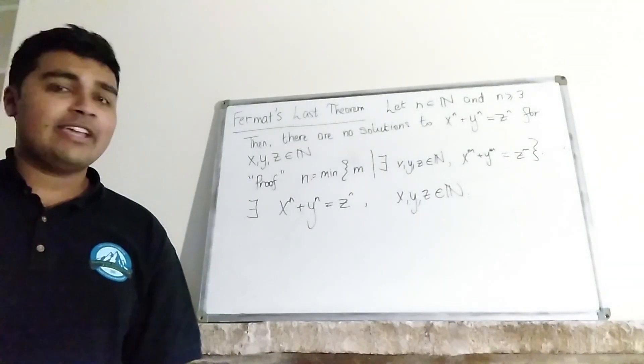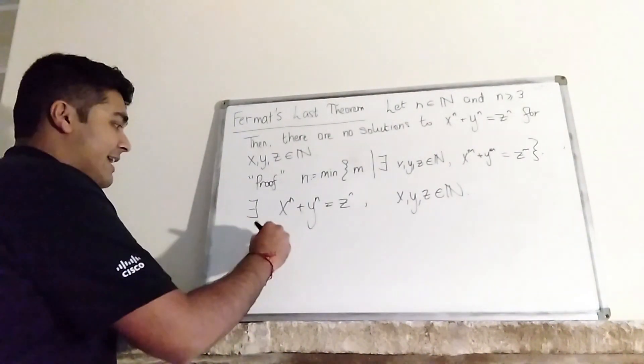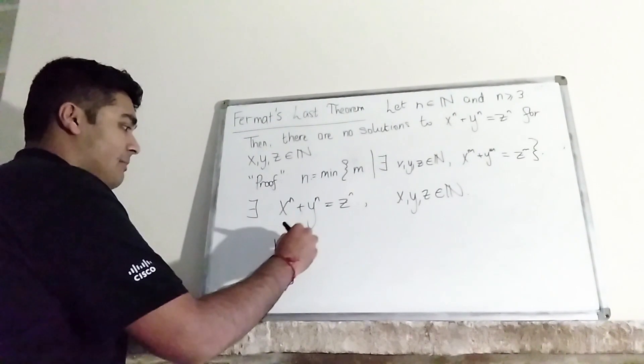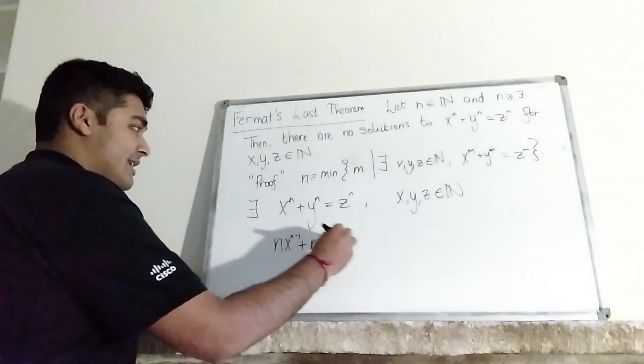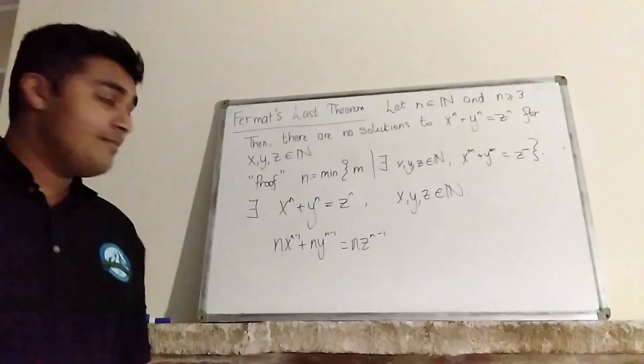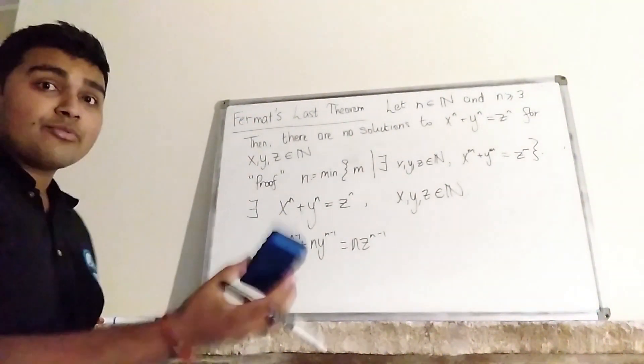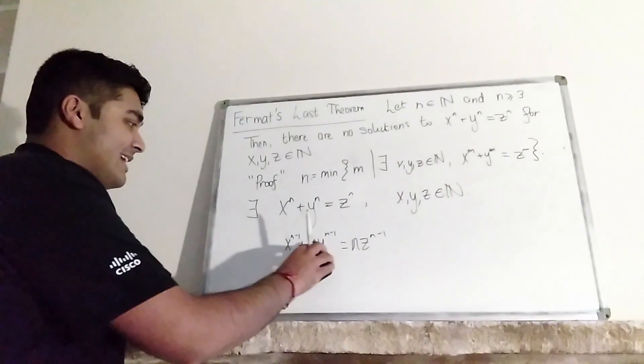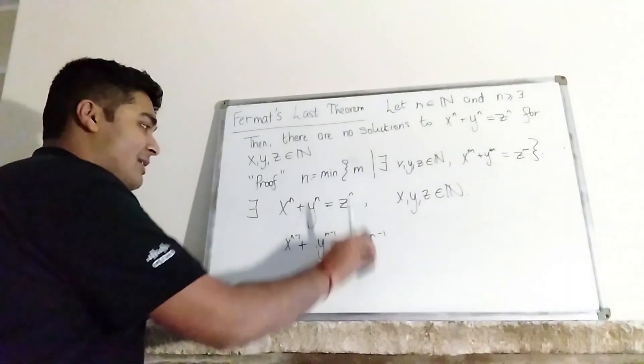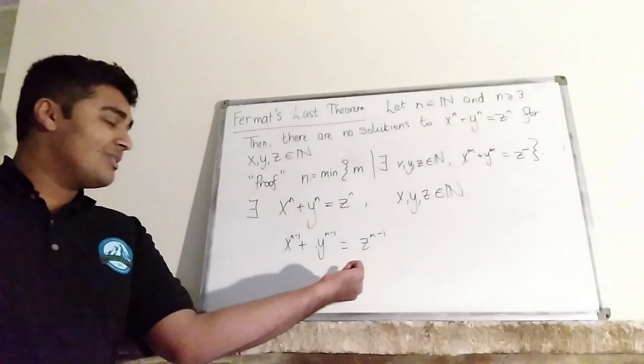Now what we're going to do is differentiate everything. So on the left hand side I get nx^(n-1) + ny^(n-1) = nz^(n-1). But now there's a common factor of n so I can divide through by n, so I get x^(n-1) + y^(n-1) = z^(n-1).